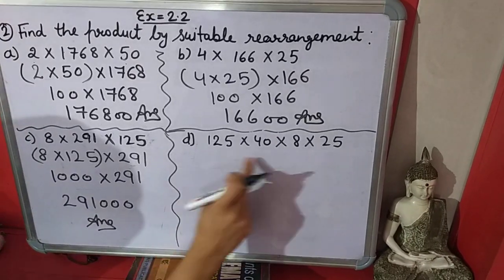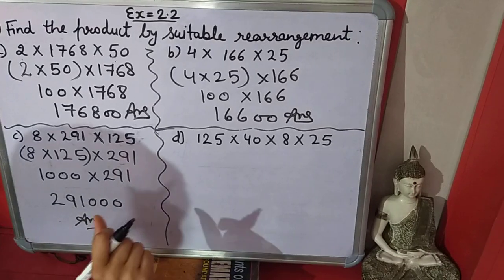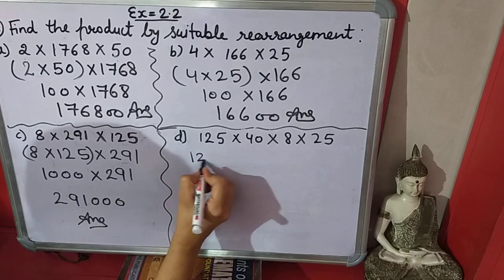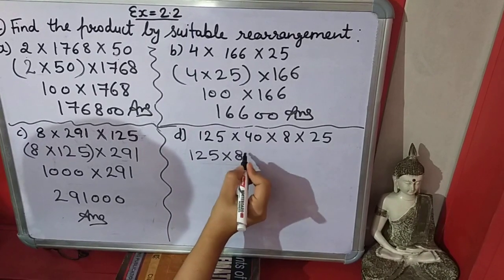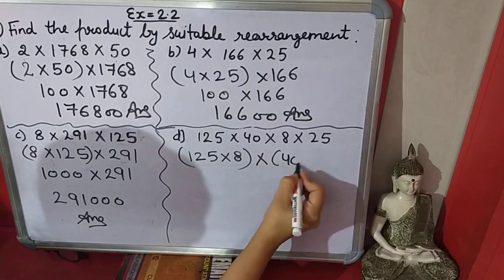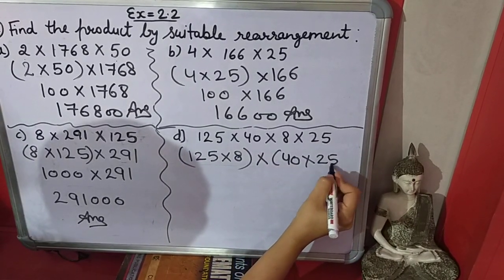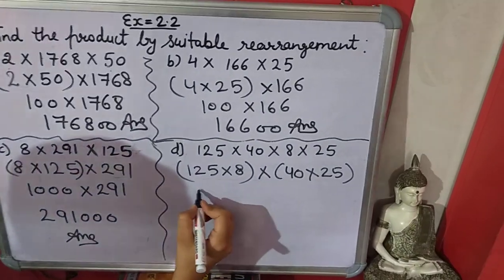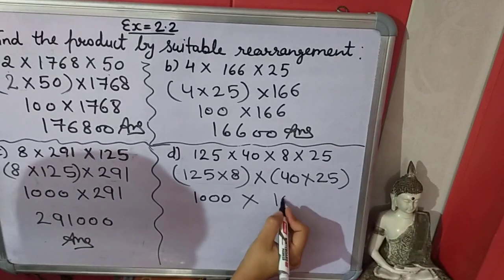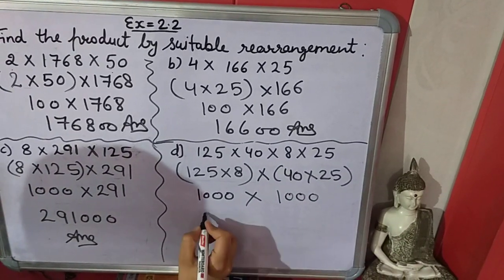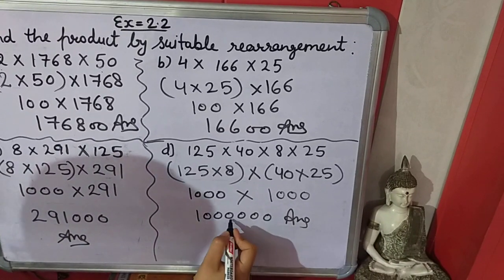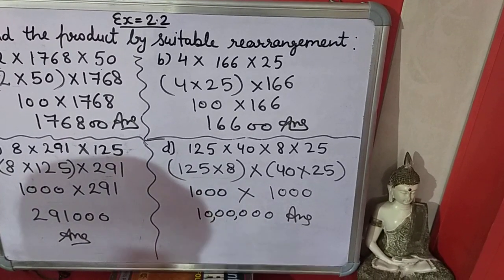Now in this question four numbers are there, so we will choose numbers like if I multiply 125 and 8 together and rest numbers 40 and 25 will come in another bracket. 125 into 8 is 1000, and 40 times 25 is 1000. So it will be 10 lakh.